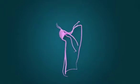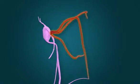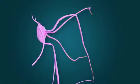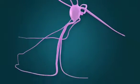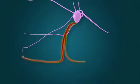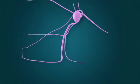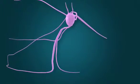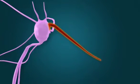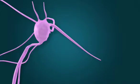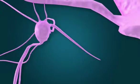Sensory fibers from the nasal cavity, palate, and nasopharynx course through the pterygopalatine ganglion in the pterygopalatine fossa and join the maxillary nerve.